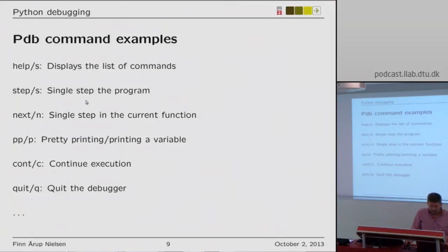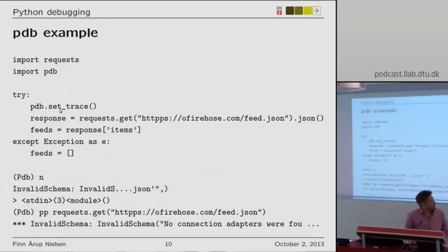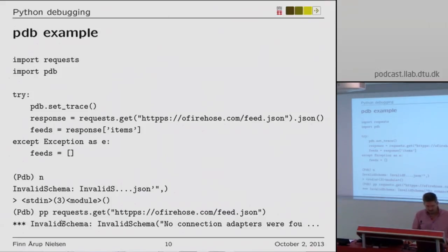There you have keyboard shortcuts — help with -h shows the list of commands. There are the usual debug functions: step to go into function calls, next to step over them, pretty printing, continuing execution, and quitting the debugger. In this example, I import pdb directly, set a breakpoint with set_trace, and when executed you run into the pdb prompt. Pressing 'n' executes the next line, which complains about an invalid schema.